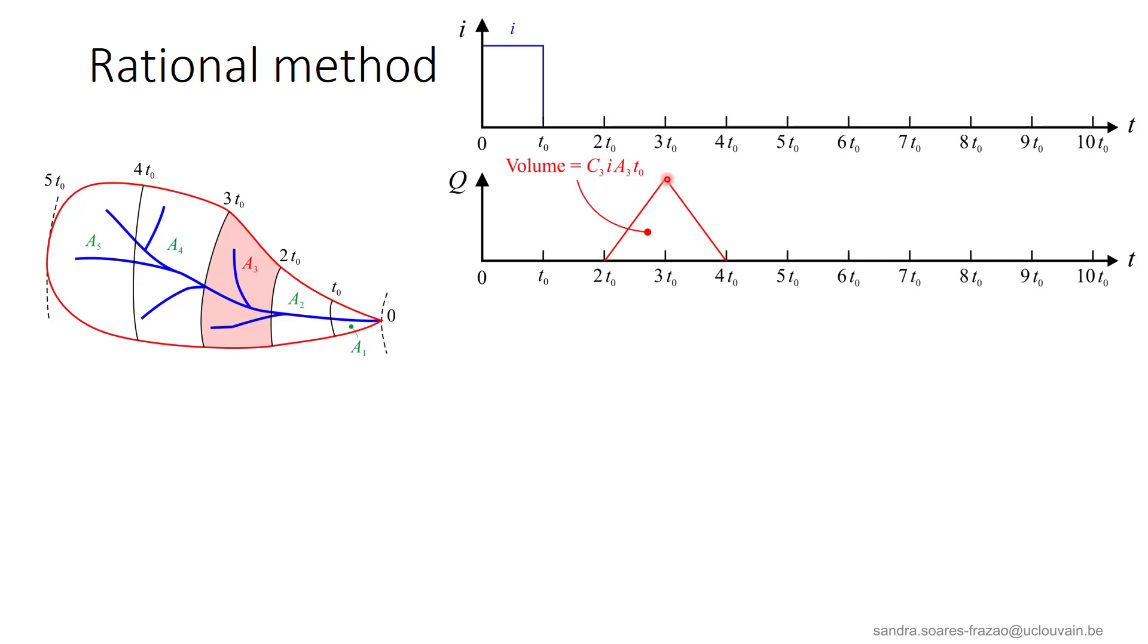And then, from time 3 T0 to time 4 T0, to a decrease of the discharge, corresponding to a progressive emptying of A3. So, the first drop of water, falling here on isochrone 2 T0, will arrive at the outlet at 2 T0. And the last one, falling here on time T0 on isochrone 3 T0, will arrive at time 4 T0.